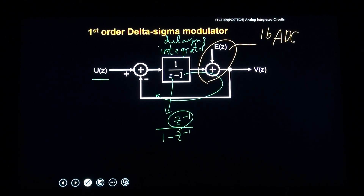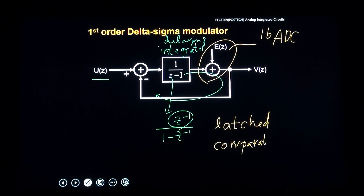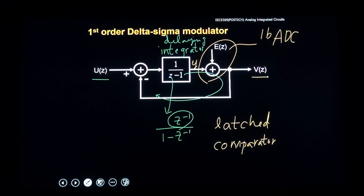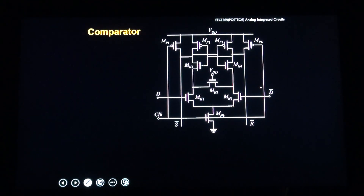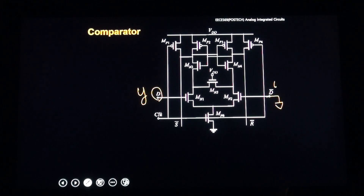This one-bit quantizer can be implemented by a latched comparator. The latched comparator compares this analog output — which is the integrator output — with zero. If Y is positive, B is set to one; if Y is negative, B is minus one. It keeps that value during one time interval nT to (n+1)T, so VG doesn't change during this time interval. We need a latched comparator for that. The input D (which is Y) may be connected to some reference, which is zero volts.